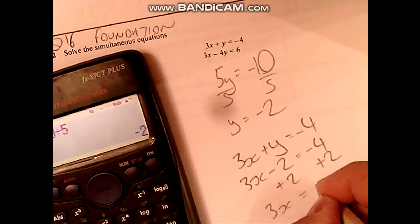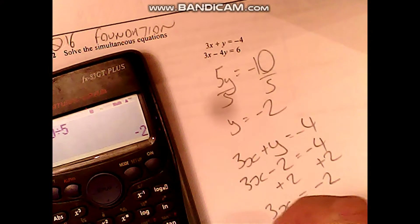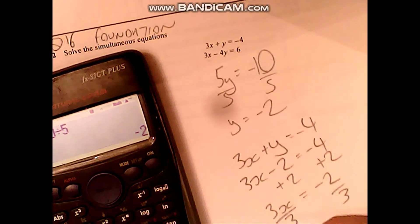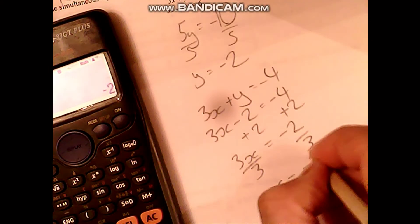3x equals minus 2, and then you divide it by 3. x must equal minus 2 thirds.